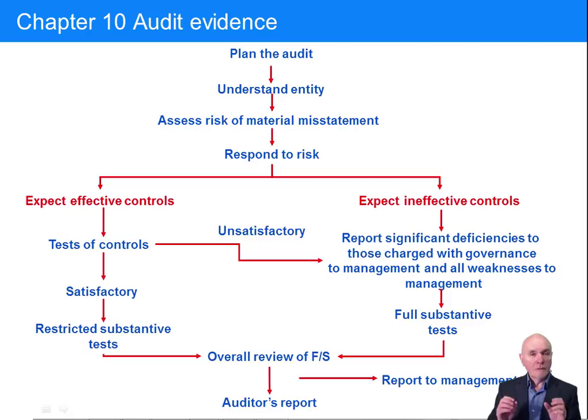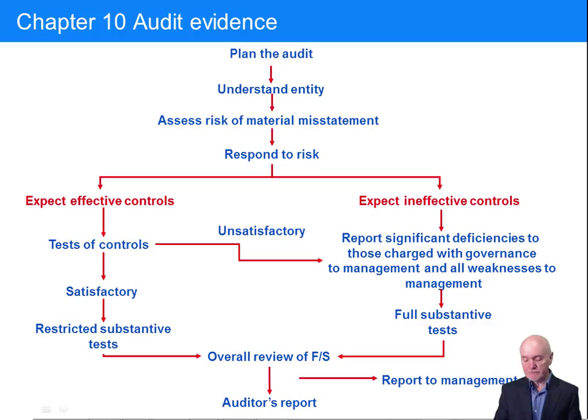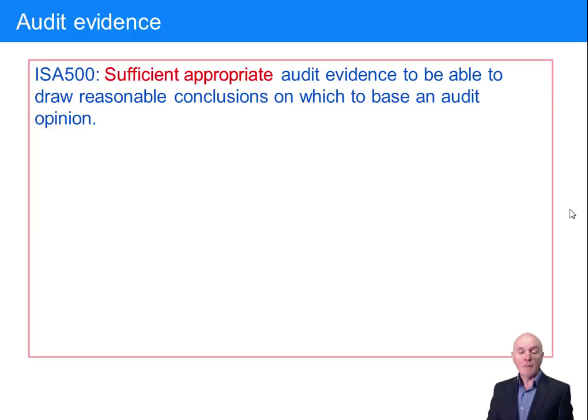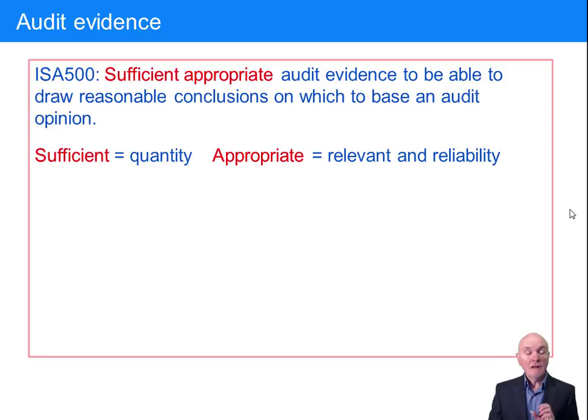What is meant by evidence? What are the types of evidence? How much do we need? Are there different qualities, different reliabilities of evidence? First of all, we need sufficient, appropriate audit evidence to be able to draw reasonable conclusions. 'Sufficient' is really a quantity of evidence — that we have collected enough.